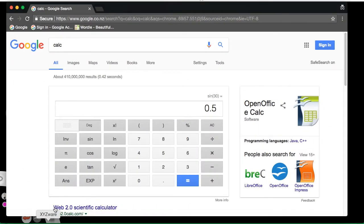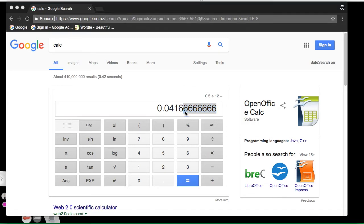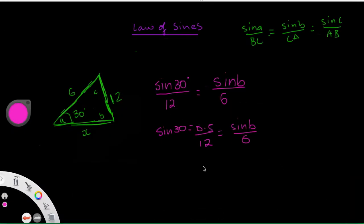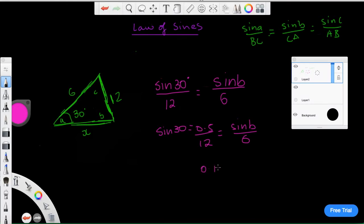We'll go to Google Chrome, divided by 12 equals 0 point this big number. So what we'll do is we'll go to the first three decimal places. We'll round it off. So it would be 0.0147 equals sine of B over 6.